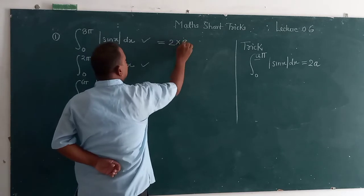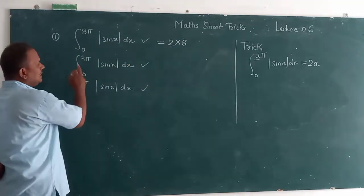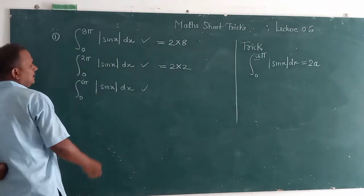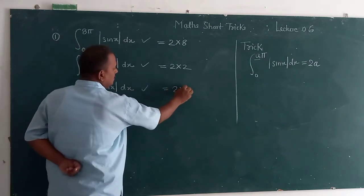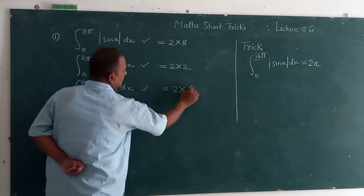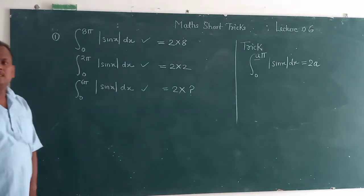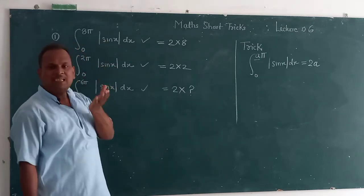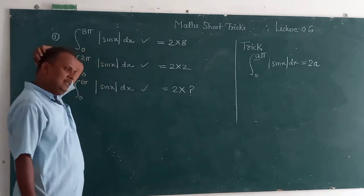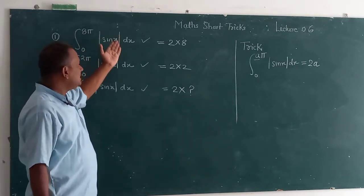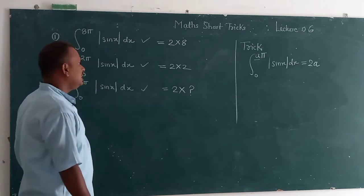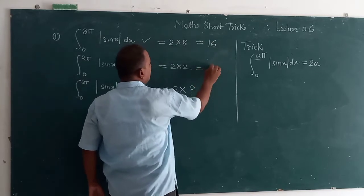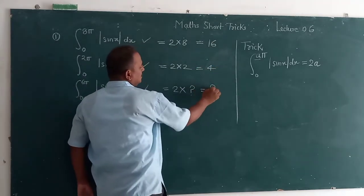2 multiplied by 8, so what is the answer? 2 multiplied by 2, so what is the answer? 2 multiplied by 6. Then we can solve: that is equal to 16, that is equal to 4, that is equal to 12. So you can find out.